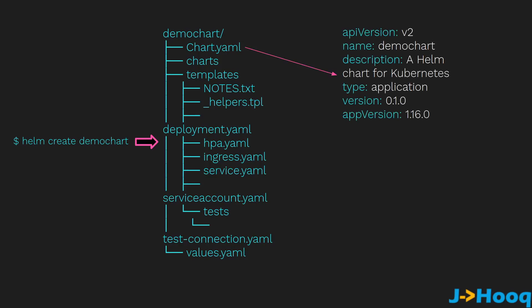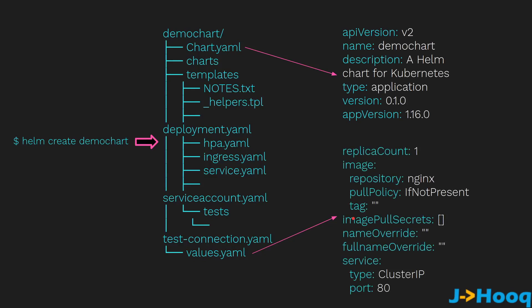Once you run 'helm create demo-chart', Helm creates a chart.yml for you. It basically contains metadata for your Helm Chart — information like API version, name, description, type, version, and app version. The great thing is you don't need to type all this information manually; Helm creates it for you. You can see that all the basic work is already done — you don't have to write those configuration YAMLs for Kubernetes deployments and services manually.